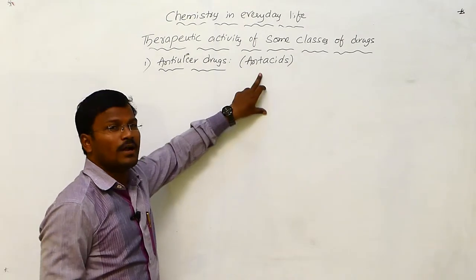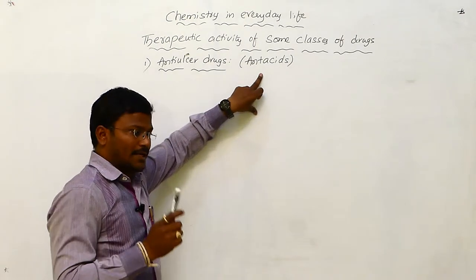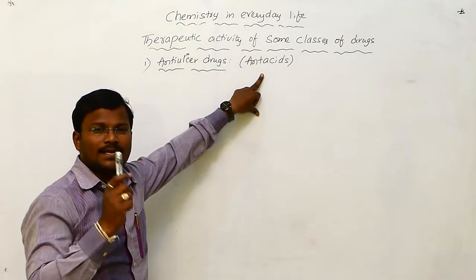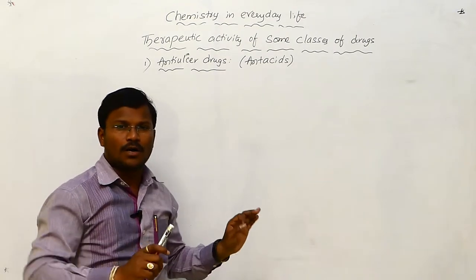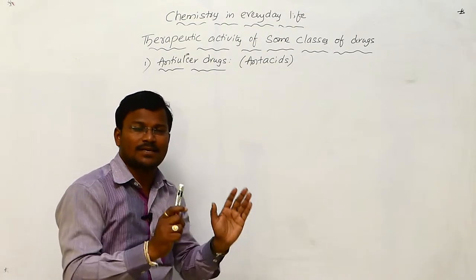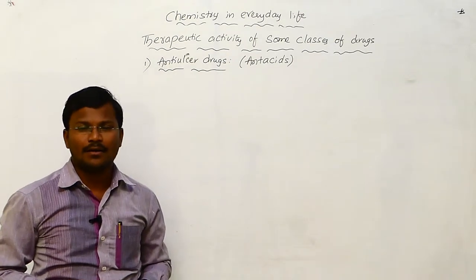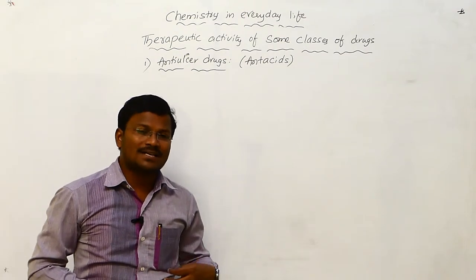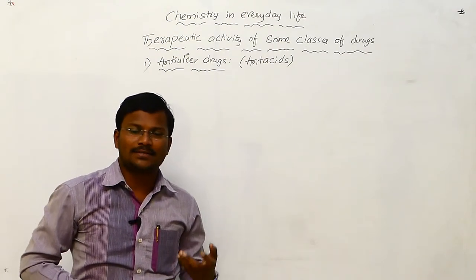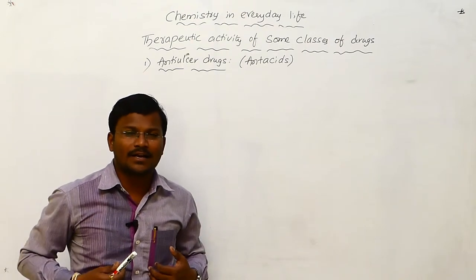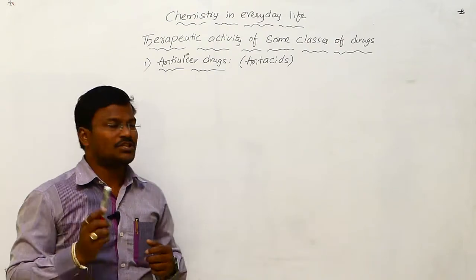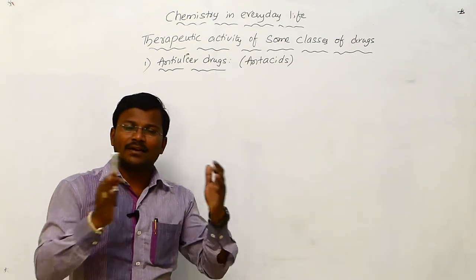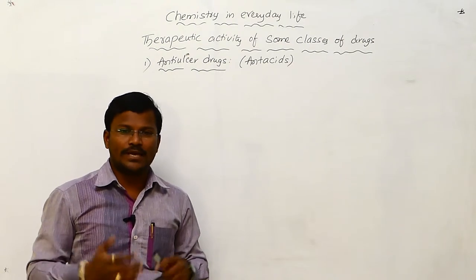Histamine is the neurotransmitter, and histamine receptors participate in the release of pepsin and hydrochloric acid into our stomachs. When over-secretion of hydrochloric acid takes place, it increases the acidic condition in the stomach, which leads to acidity.